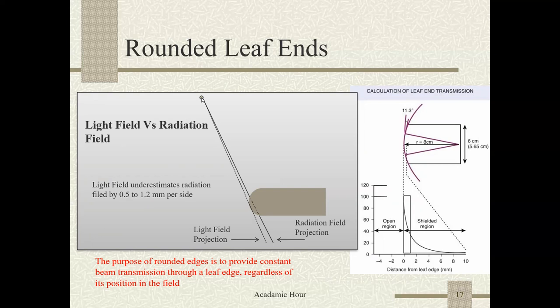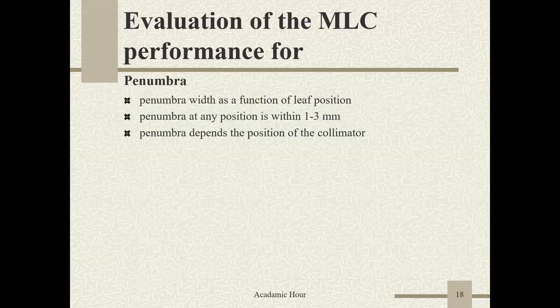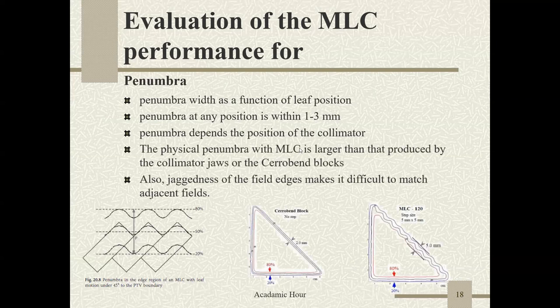Comparing the light field versus the radiation field: from the source, the light field projection on the surface differs from the radiation field captured on film or portal dosimetry. The light field underestimates the radiation field by 0.5 to 1.2 millimeters per side. The penumbra width is a function of leaf position, and at any position it is within 1 to 3 mm. The physical penumbra with the MLC is larger than that produced by the collimator jaw or the cerrobend block. The jaggedness of the field edge is a disadvantage of MLCs compared to cerrobend blocks.